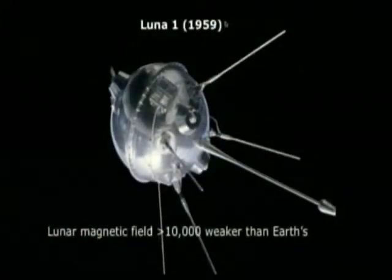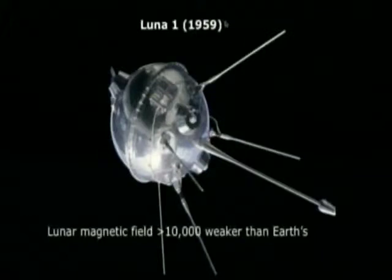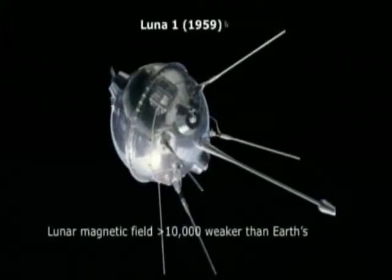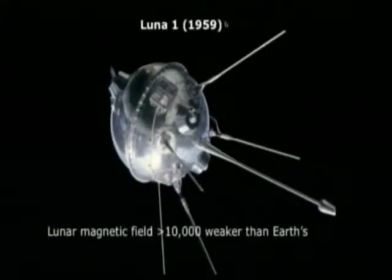The prediction is that the early Moon should have generated a large-scale magnetic field like the Earth does today. And yet, the first object to leave Earth's orbit — the Luna 1 spacecraft in 1959 — carried a magnetometer, and it was immediately clear that the Moon does not have a magnetic field today. If it does have one, it's at least 10,000 times weaker than the Earth's.